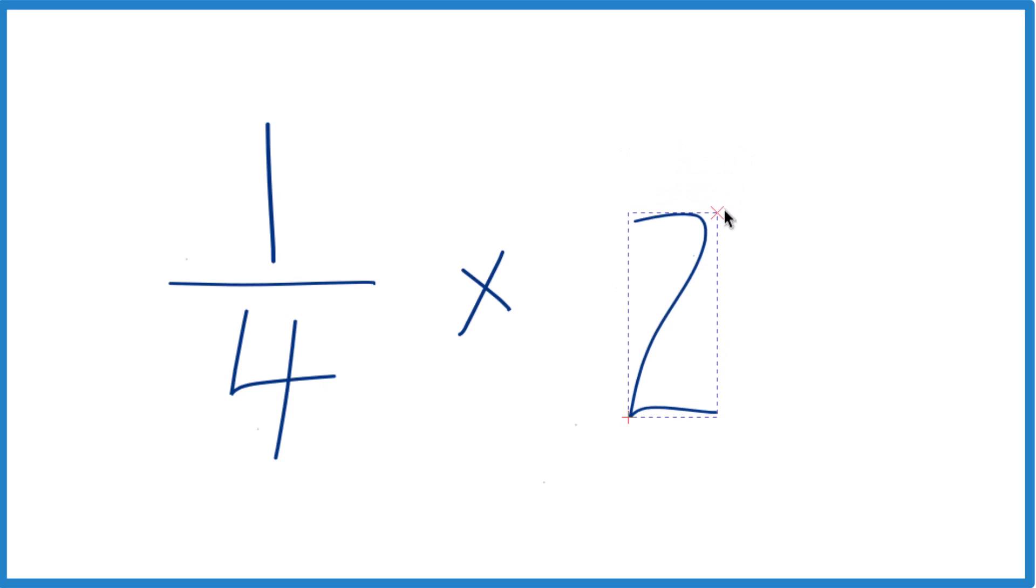And then let's take our two here, shrink it down some, and then let's call it two over one. Two over one is still two. Two divided by one, that's still two.